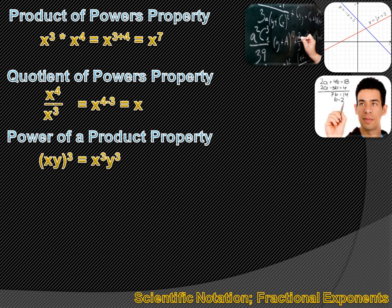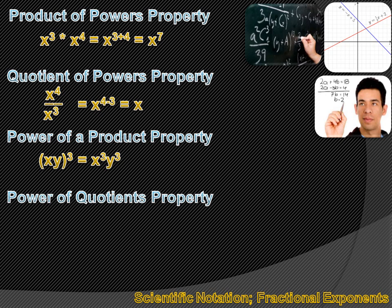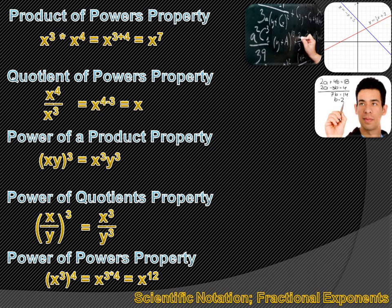The power of products property means you can distribute that power to everything inside the parentheses: x times y, raised to the third power, equals x to the third times y to the third. The power of quotients property is the same idea: x divided by y, raised to the third power, equals x to the third divided by y to the third. The power of powers property states that a variable raised to a power, then raised to another power, gives you the variable raised to the product of the two exponents: x to the third raised to the fourth equals x to the twelfth.